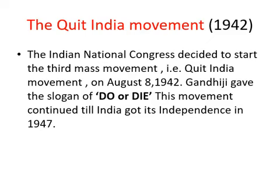The Quit India Movement: The Indian National Congress decided to start the third mass movement — the Quit India Movement — on August 8, 1942. Gandhiji gave the slogan 'Do or Die.' This movement continued till India got its independence in 1947.